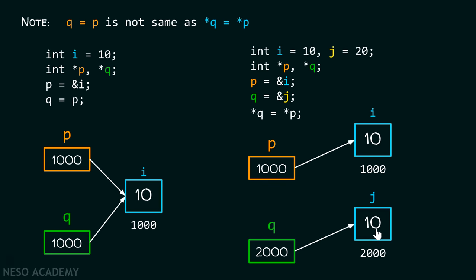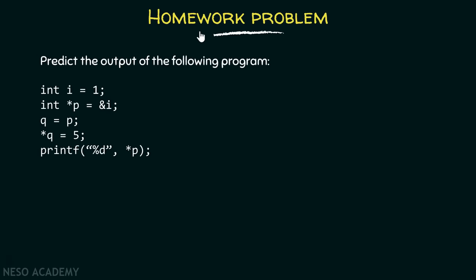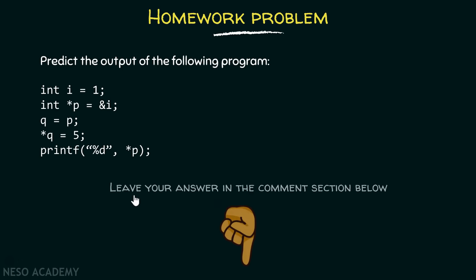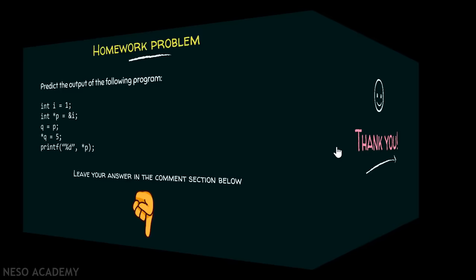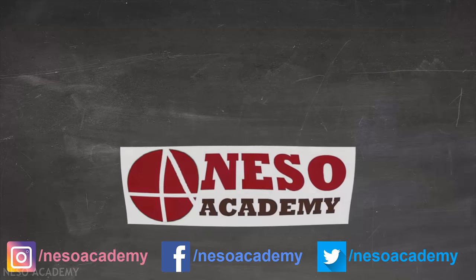We can clearly see that q = p is not the same as *q = *p. Here is one homework problem for you — predict the output of the following program. You are always welcome to leave your answers in the comment section below. Okay friends, this is it for now. Thank you for watching this presentation.